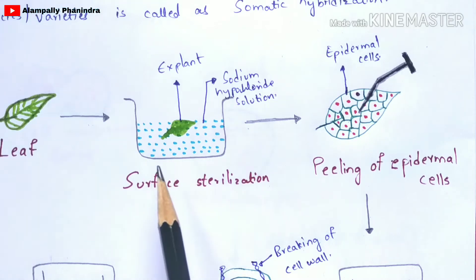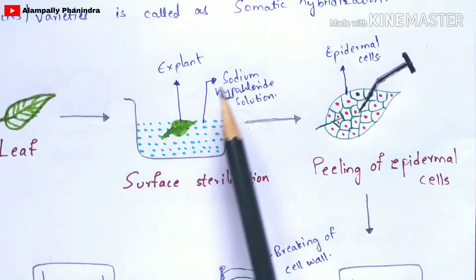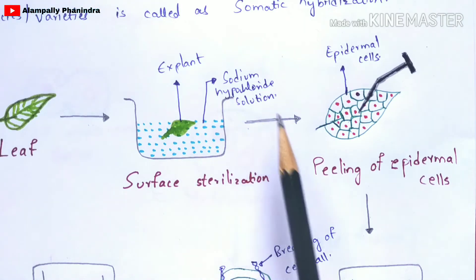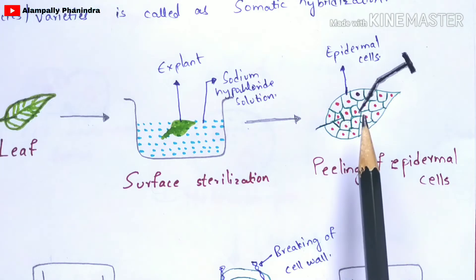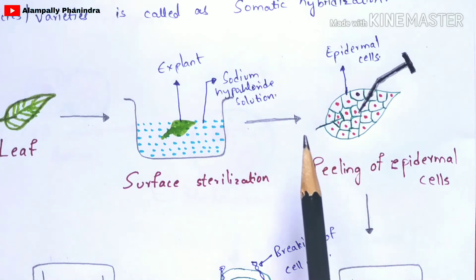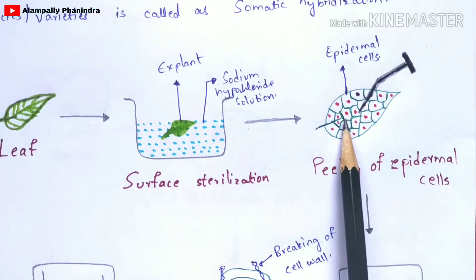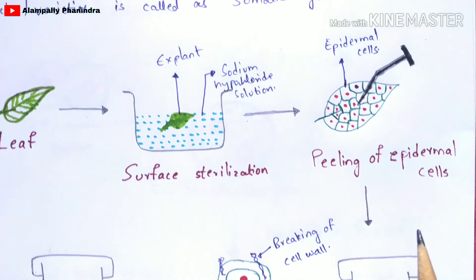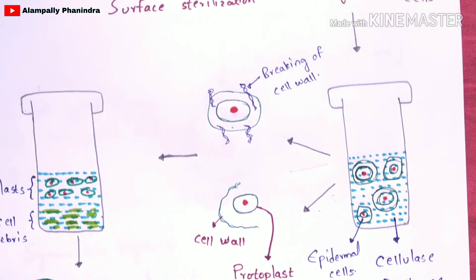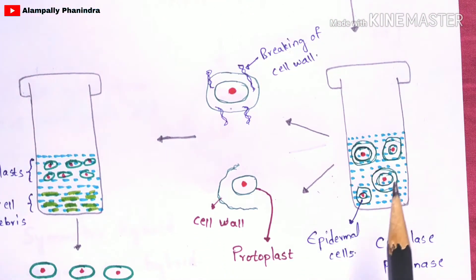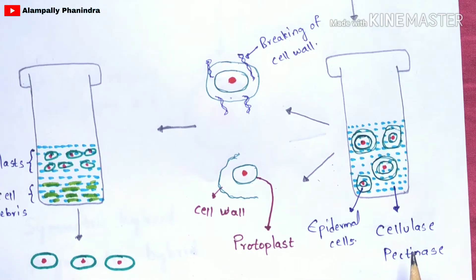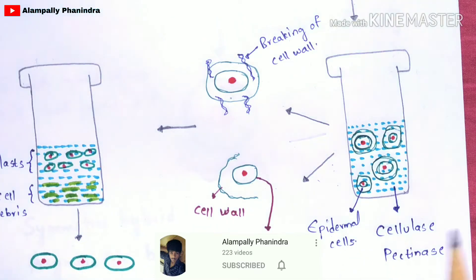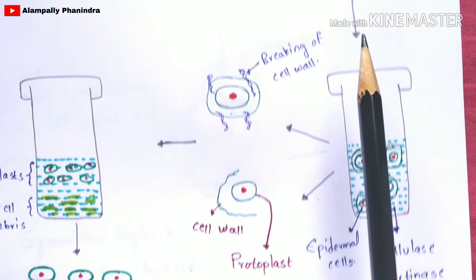The leaf extracted is now free from bacteria. The leaf consists of epidermal cells, which you can observe under a microscope. You peel each epidermal cell and place them in a test tube containing a solution with enzymes — cellulase and pectinase. The main function of cellulase and pectinase is to cleave the cell wall from the cell.